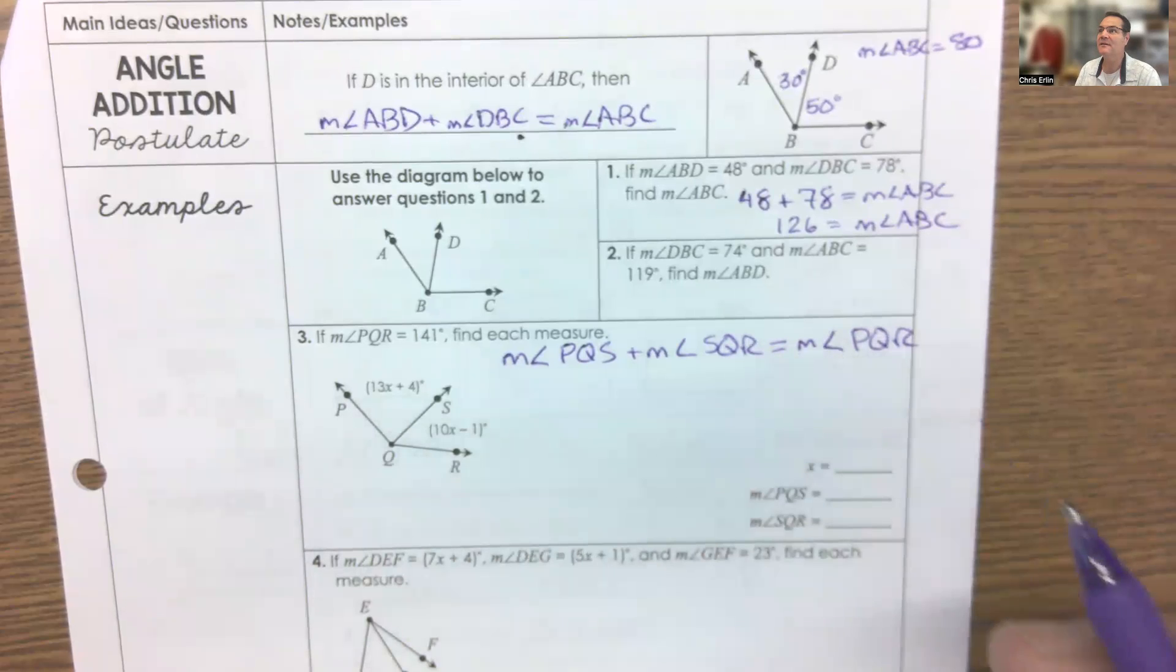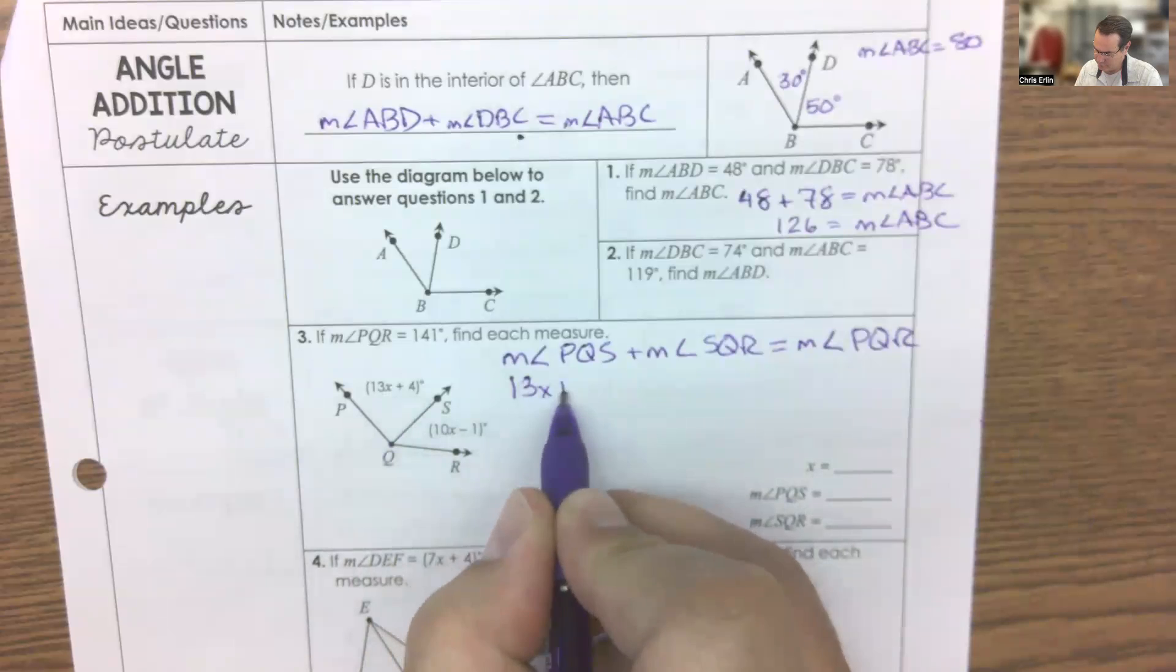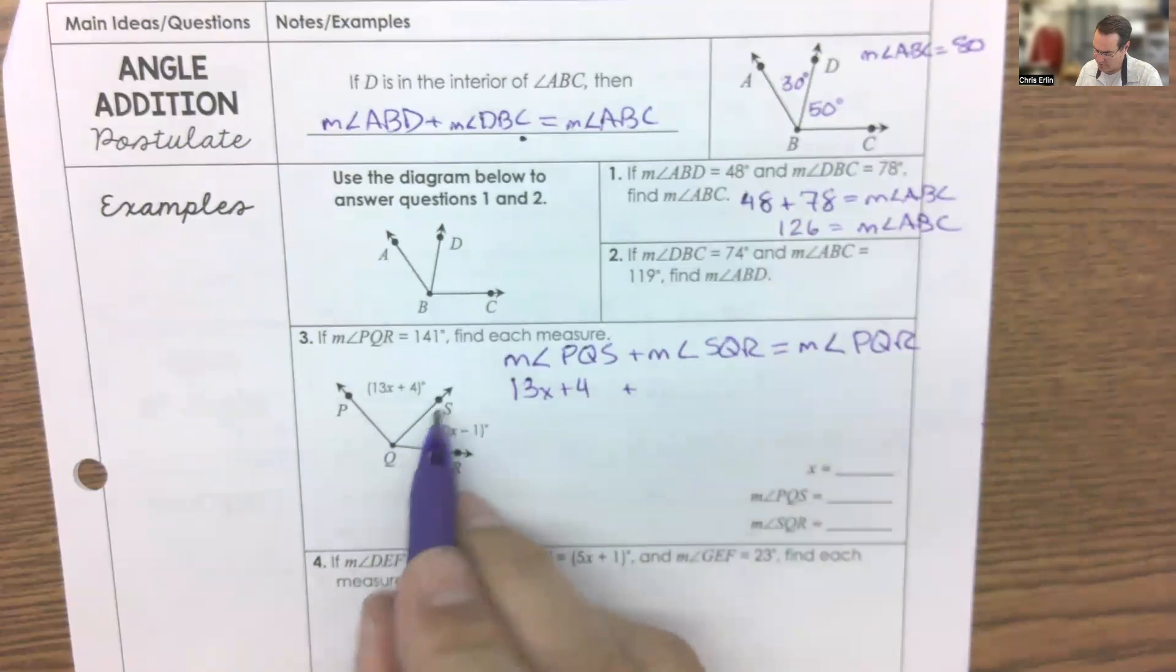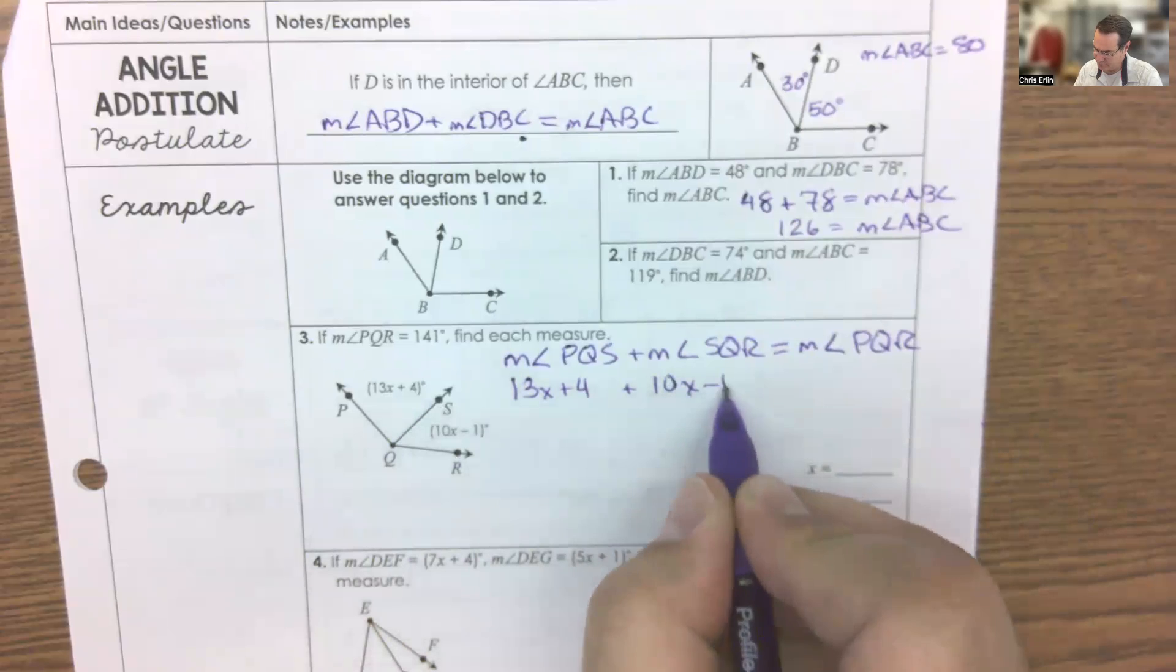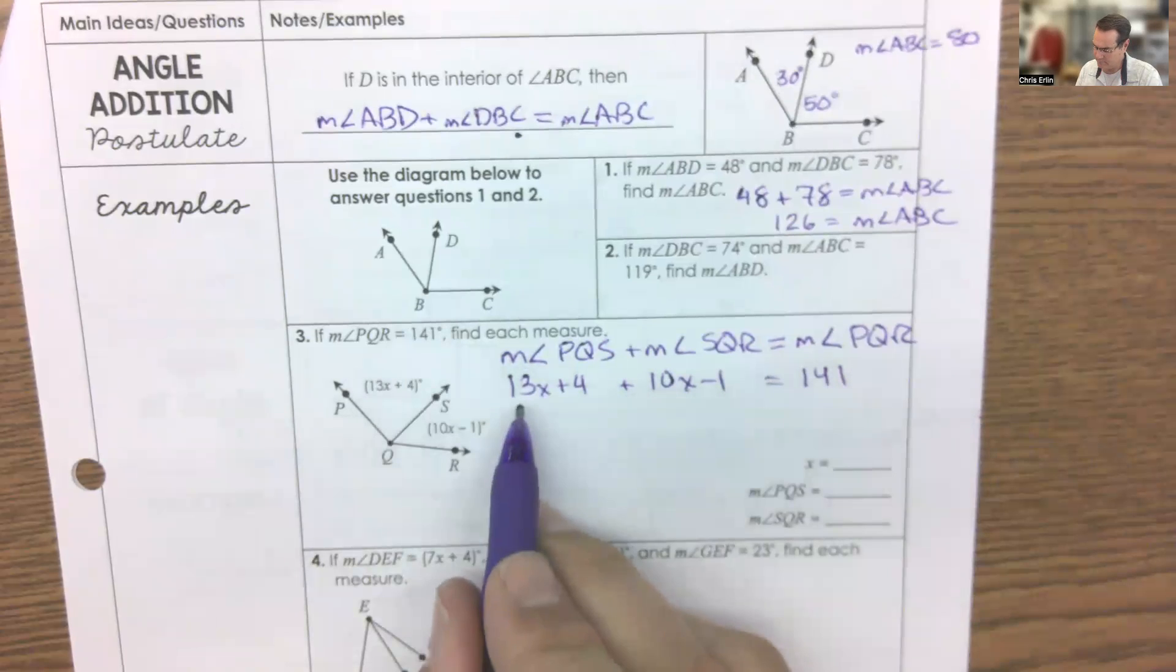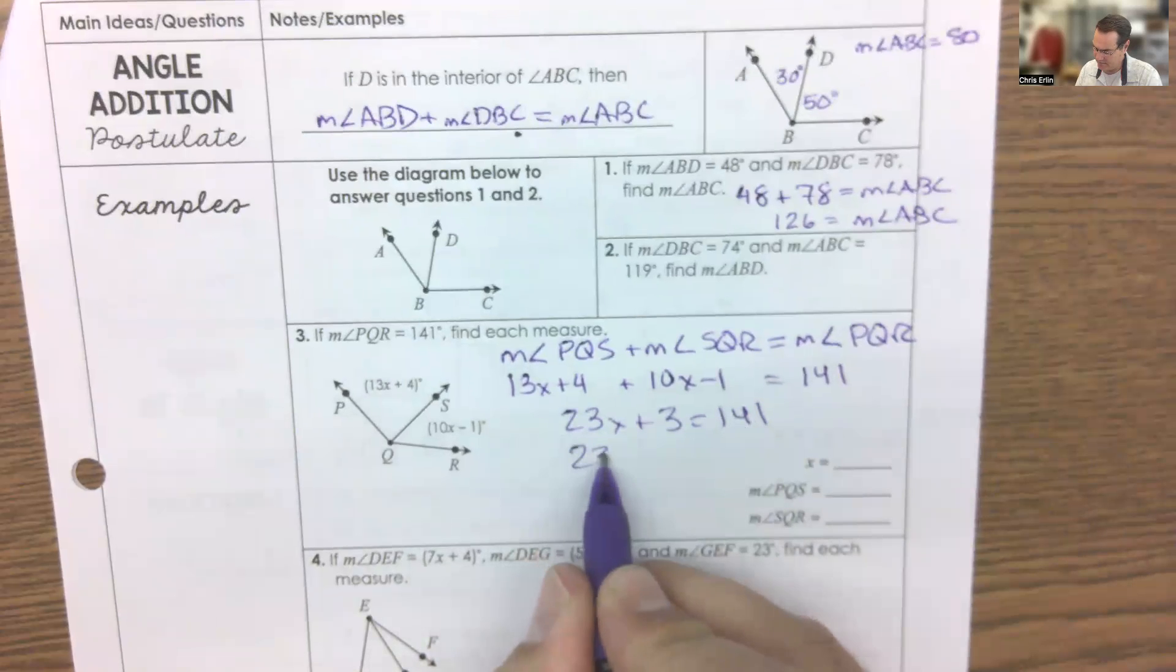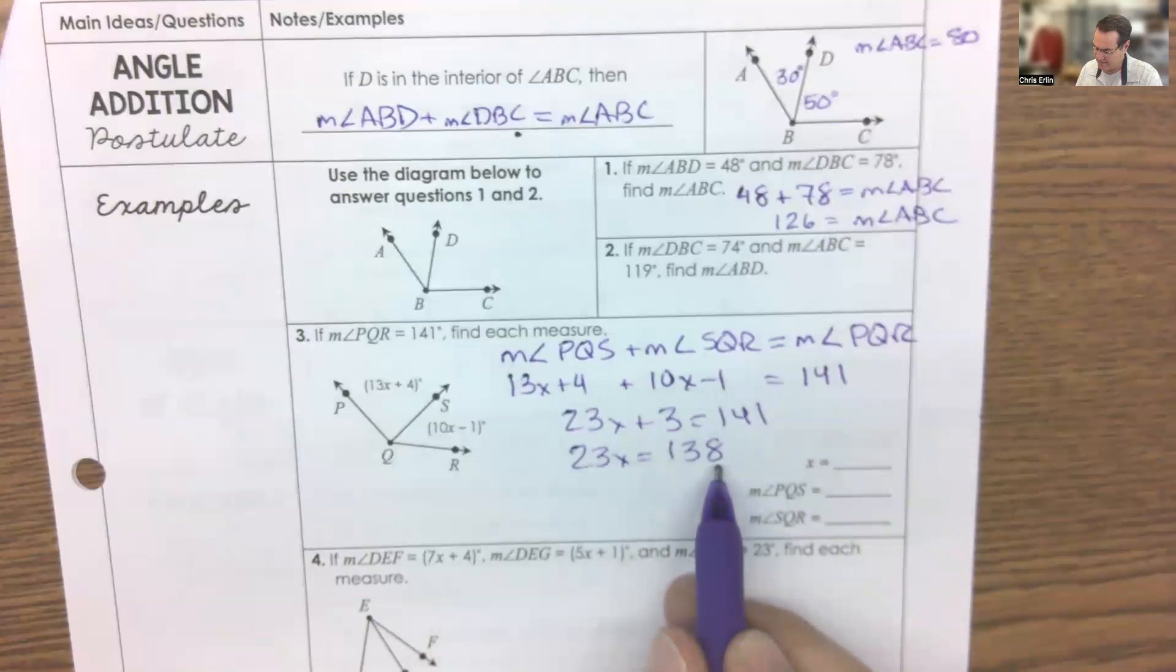And once we write this out, it's really easy to make the equation and solve. PQS was given to us to be this 13X plus 4. SQR was 10X minus 1. And PQR, it's up here, 141. Combined like terms, 23X plus 3 equals 141 minus 3, 138. To get a 3 to be an 8, exactly, maybe 6. 6 times 2 is 12, 18, yeah. So divide by 23, X equals 6.